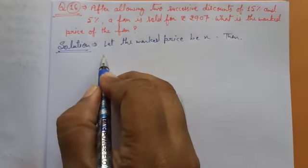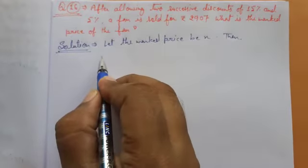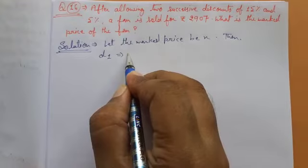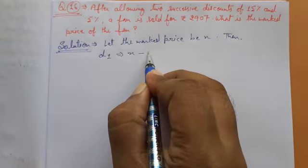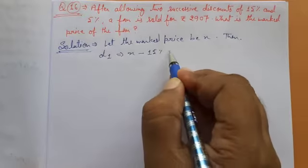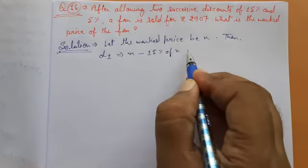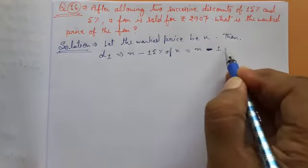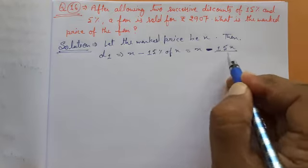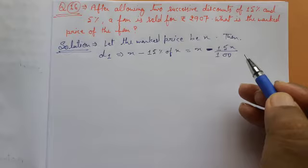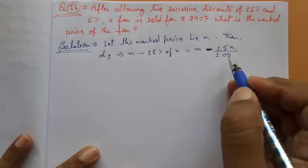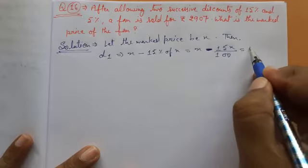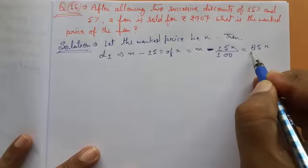Then we need to do the first discount. D1, the first discount, that will be X minus 15% of X, which equals X minus 15X upon 100. When we solve it, it will be 85X upon 100.